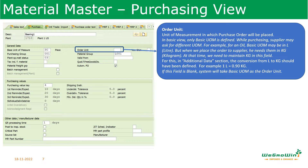Let us start with the order unit. Order unit is the unit of measurement in which the purchase order will be placed. In the basic view, only the basic unit of measurement was defined. While purchasing, the supplier may ask for a different unit of measurement. For example, if we take oil, the basic unit of measurement may be in liters, but when we place the order to the supplier, he may need it in kilograms or in drums. The link between liters and these different units like kilograms will be maintained in the additional data options. If this field is blank, the system will take the basic unit of measurement as the order unit.